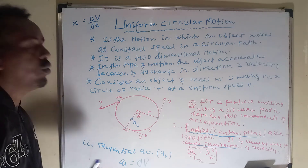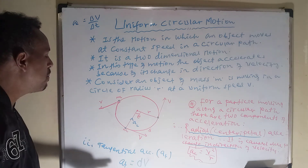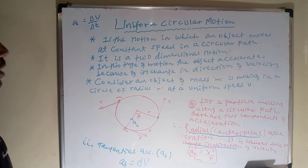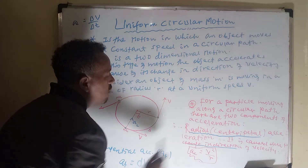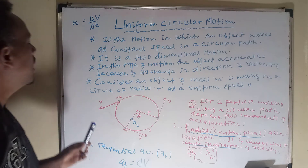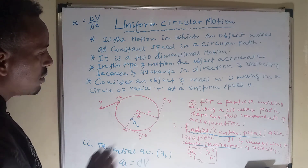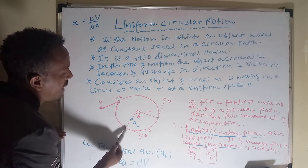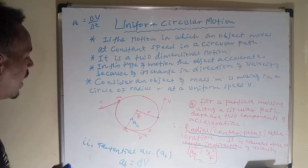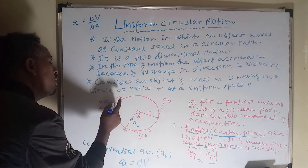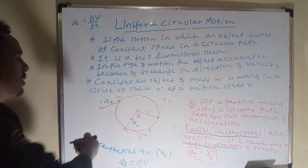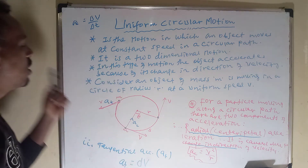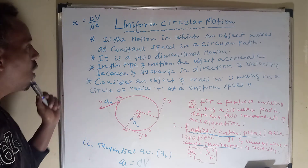If there is no change in the magnitude of velocity, no tangential acceleration is formed. Centripetal or radial acceleration is always directed towards the center of the circle, whereas tangential acceleration is always tangent to the circle — along the direction of velocity, which is tangent to the path followed by the moving object.